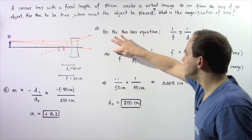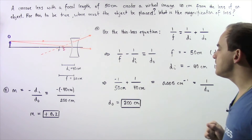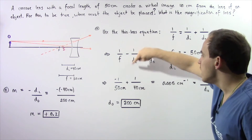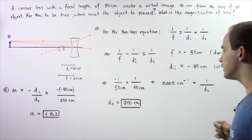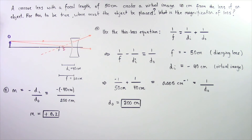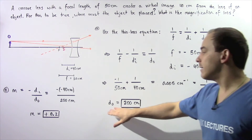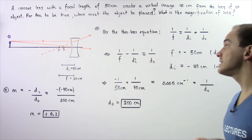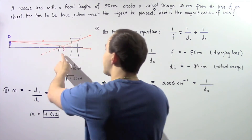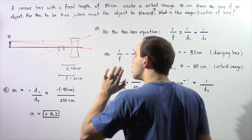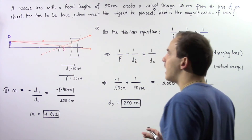So we have 1 divided by negative 50 centimeters minus negative 1 divided by 40 centimeters — this becomes a positive — which gives us 0.005 centimeters to the negative 1, and this is equal to 1 divided by the object distance. So the object distance is equal to 200 centimeters. The positive sign means it's found on the same side as our image, so the object is found 200 centimeters to the left of our concave lens.